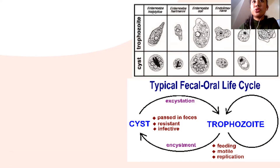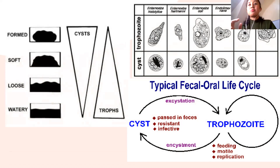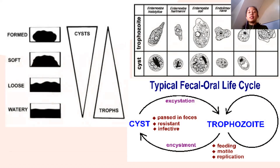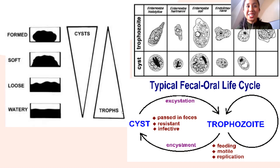Entamoeba histolytica in trophozoite form may contain ingested red blood cells inside — a confirmatory sign. In formed stool, there are more cysts compared to trophozoites. As stool becomes more watery, there are fewer cysts but more trophozoites — the watery environment is more favorable for trophozoites.